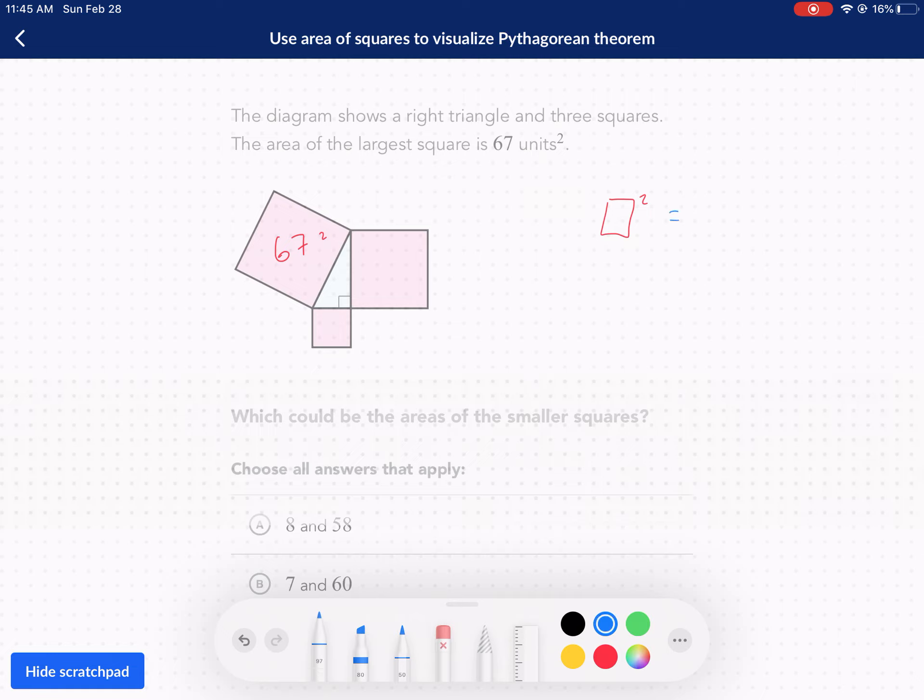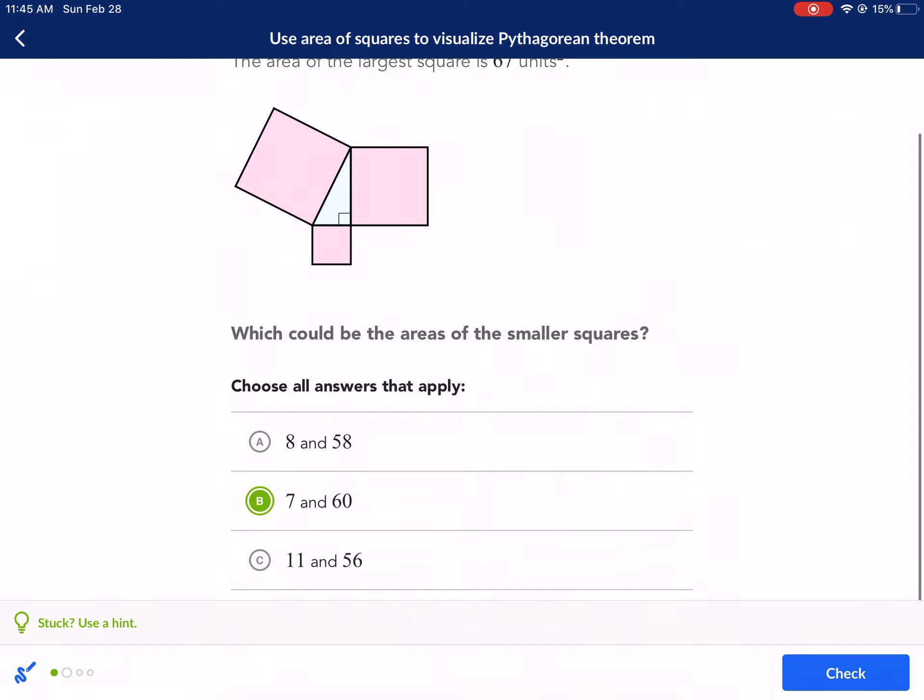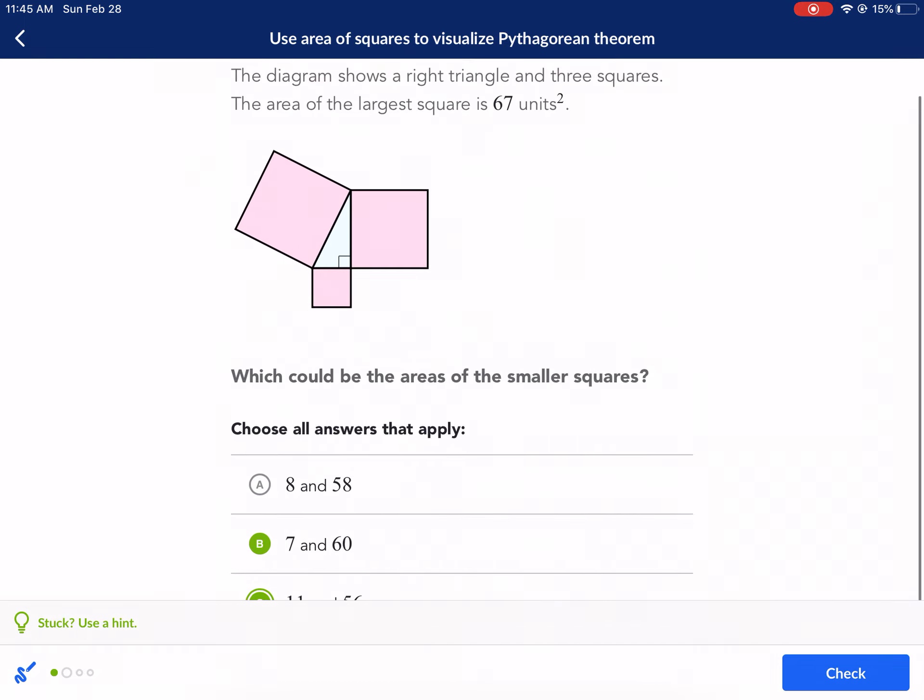What could be the areas of the smaller squares? We just need to find something that adds up to 67. 8 and 58 add up to 66. That's no good. We want 67. This adds up to 67. So B adds up to 67 and also C adds up to 67, so it could be B or C as our answers.